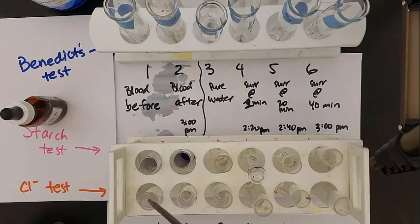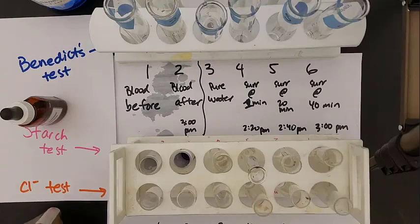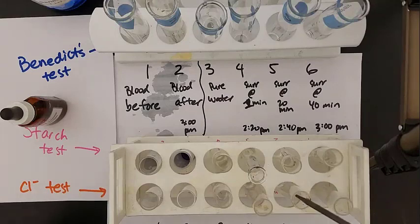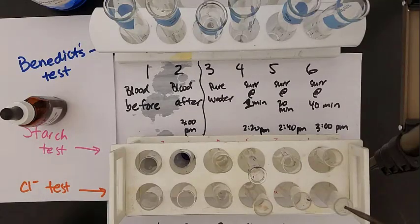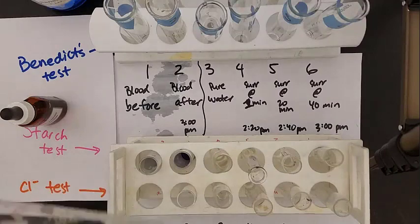Next we'll test for chloride. Sodium is hard to get a good reaction, so we'll test for chloride instead. We add a couple drops of silver nitrate into each test tube. Silver ions react with chloride ions to give a white precipitate. We'll mix those and take a look at each test tube in a second.